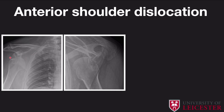In anterior shoulder dislocations, you tend to get a fracture of the inferior glenoid. On the axial view, you can see the acromion, coracoid process, and acromioclavicular joint. The humeral head — which should be articulating with the glenoid — has moved anteriorly. We know it's anterior because the acromion is the most posterior structure. The humeral head is now impacted in front of the glenoid, resulting in a Hill-Sachs deformity. Combined with the glenoid fracture, you get a bony Bankart deformity as well. This is your classical anterior shoulder dislocation — the patient will need to be relocated.